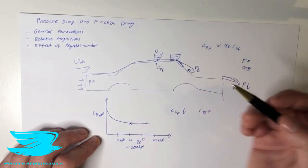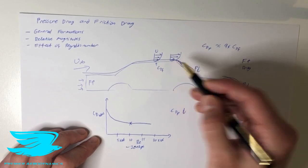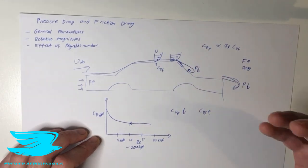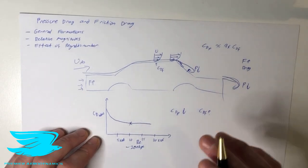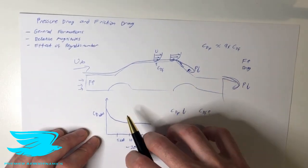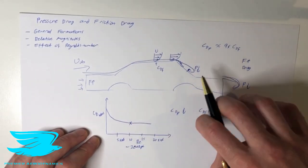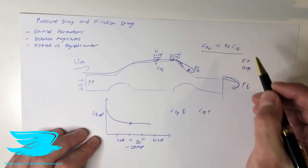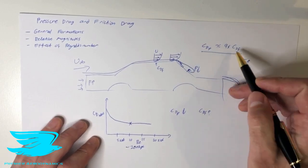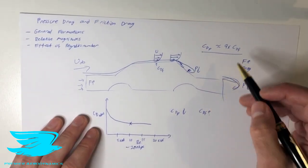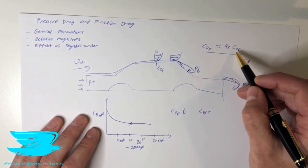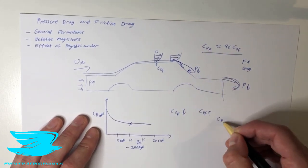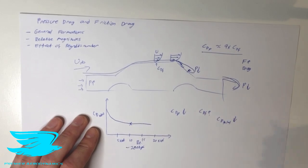However, because the velocity is faster, the velocity at the wall is faster as well, which means the skin friction drag increases too. So on one hand we have pressure drag dropping as velocity increases; on the other hand, friction drag is increasing. Because the pressure drag is usually about nine times that of the friction drag, the drop in pressure drag overrides the increase in friction drag, meaning we get an overall drop in total drag.